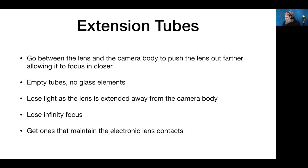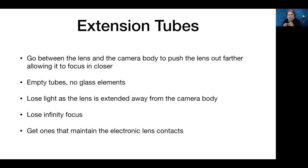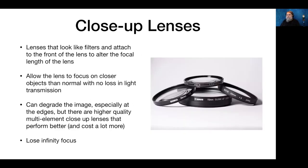Extension tubes are another way to get closer — they go between the camera and the lens but they're empty tubes with no glass. They just extend the lens out. Be careful when buying them because cheap ones may have no electrical contacts, so you can't control the aperture. When you use them, you lose infinity focus — they can only focus on things up close.